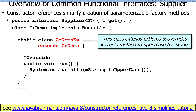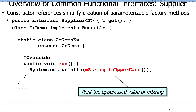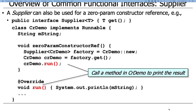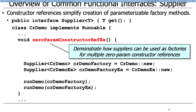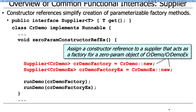Now let's look at a nested class CRDemoEx, which extends CRDemo and overrides run to uppercase the string before printing. In zeroParamConstructorRefEx, we define two supplier factories: one parameterized with CRDemo using crdemo::new, and one parameterized with CRDemoEx using crdemoex::new. So we have two different factories that know how to make two different types of objects, and we pass them to a helper method called runDemo.